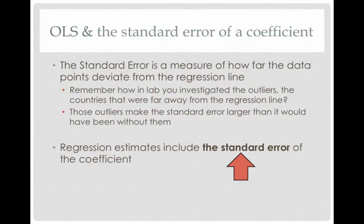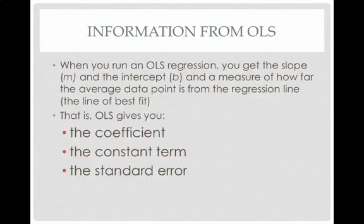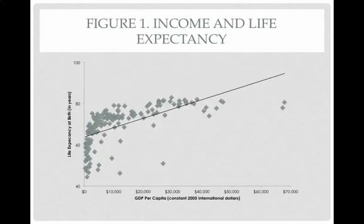So regression estimates include the standard error of the coefficient. So what you get when you run OLS is you get a coefficient, a constant term, and a standard error. That's going to tell you about the slope, how X and Y are related. You're going to know the constant term, and that's if X is zero. And you're also going to know some measure of the dispersion of the points around the line.